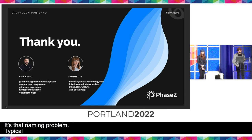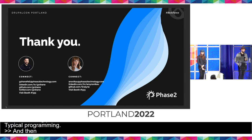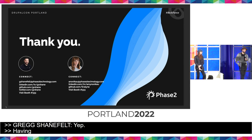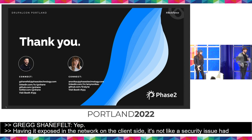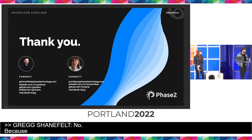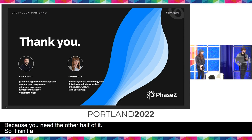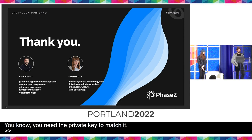Question: You mentioned using JWT for authentication between systems — is having the JWT exposed in the network on the client side a security issue? Answer: No, because you need the other half of it — the private key to match it. We never came across any compliance issues.